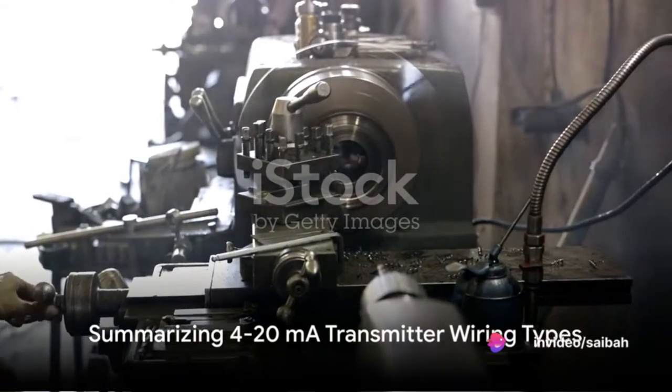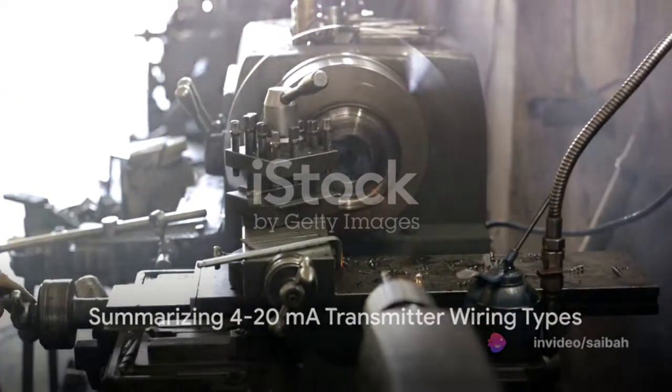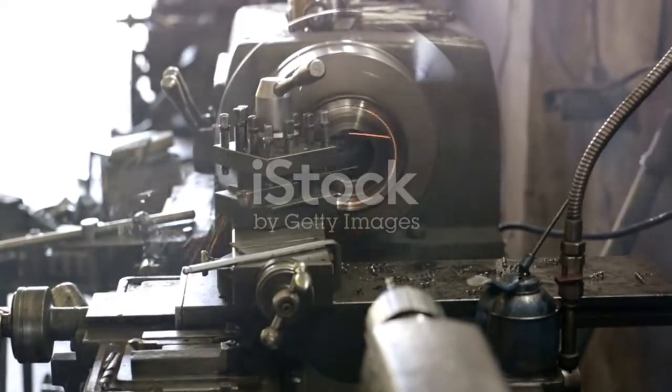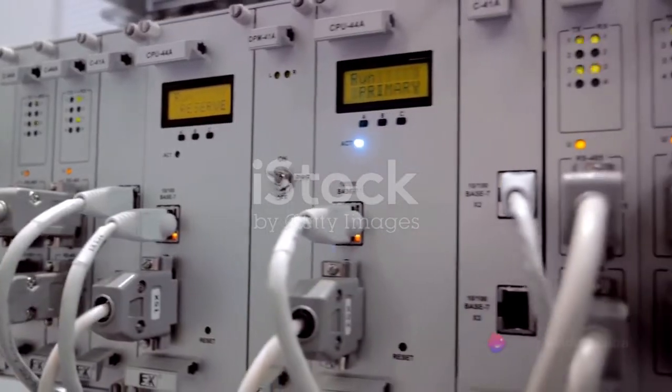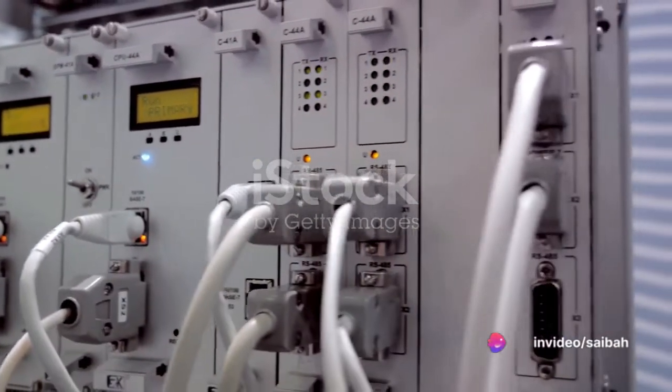Now that we've explored the different 4-20mA transmitter wiring types, let's summarize what we've learned. The 2-wire transmitter, the simplest form, is loop-powered with the power source and receiver combined into one unit. It's popular due to its simplicity and cost-effectiveness.